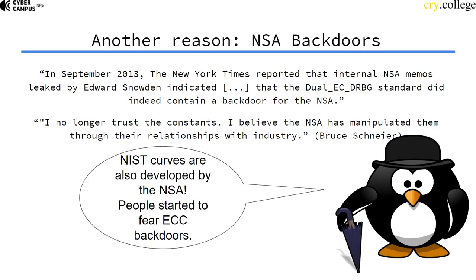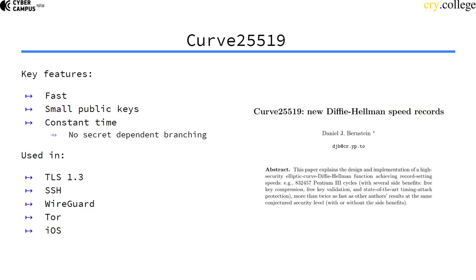People started to fear backdoors in elliptic curve standards — fearing that those elliptic curves, for example the NIST curves, have some properties they don't know about, which makes it possible for the NSA to crack them. This led to more and more people adopting Curve 25519, apart from the fact that it's just very fast and very nice to implement.